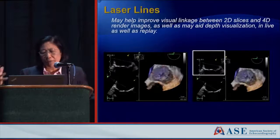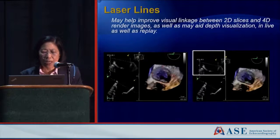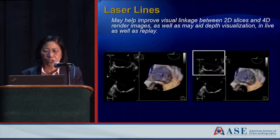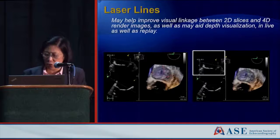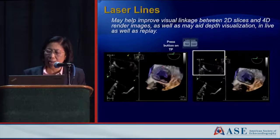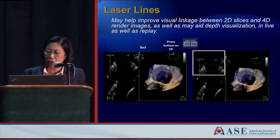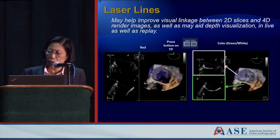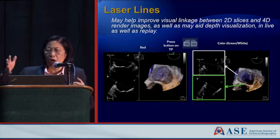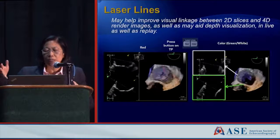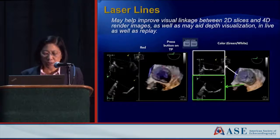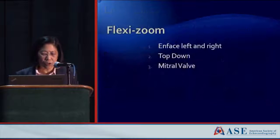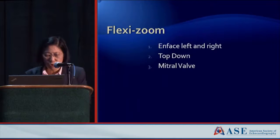In addition, laser lines allow you to see on the 3D image the exact 2D planes you are imaging — the white line and the green line — giving you the exact planes visible on your 2D display. This can be very useful in the interventional lab for orientation.